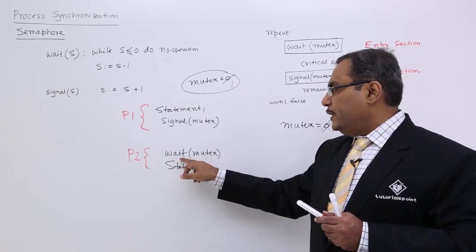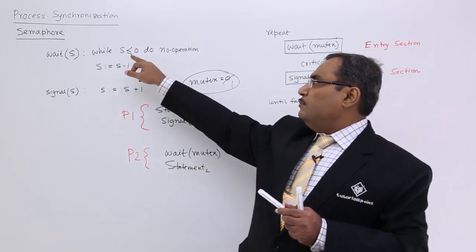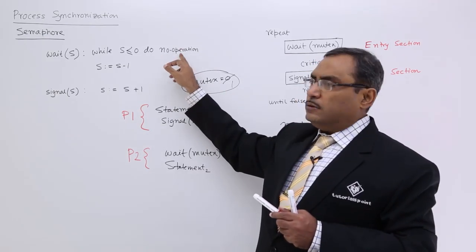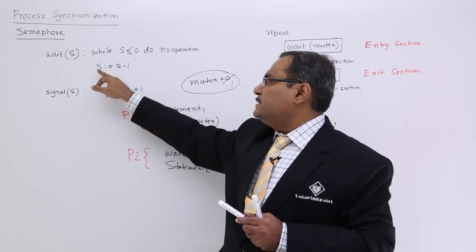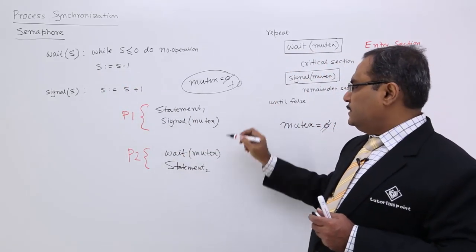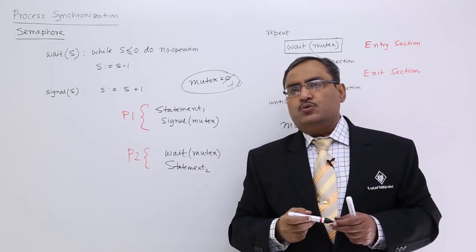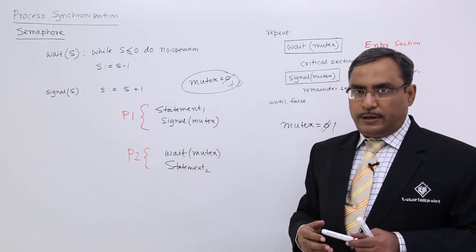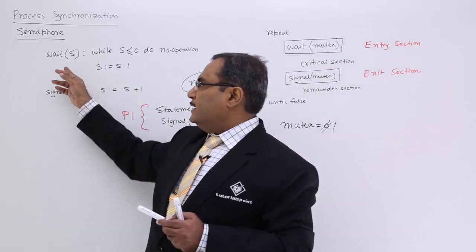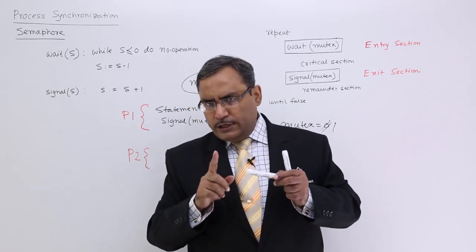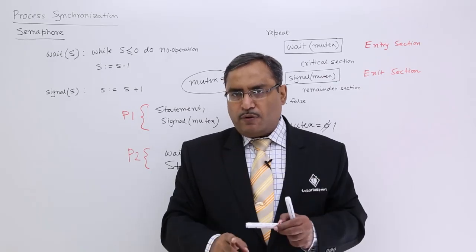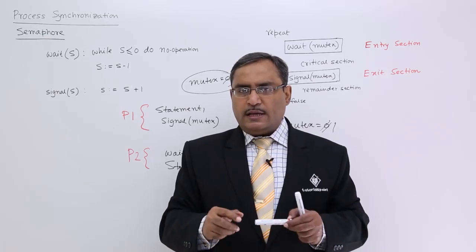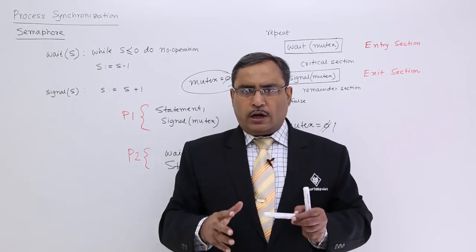Now P2 was waiting in the wait(mutex) statement. Mutex ≤ 0 is now false because it has become 1, so do no operation cannot execute. P2 comes out, makes mutex = mutex − 1 (back to 0), and executes statement 2. As a result, P1 will always execute prior to P2 — there is no other alternative. In this way, using wait and signal atomic operations on the synchronization tool semaphore, we can establish synchronization — that is, the execution order and execution sequence — between multiple cooperating concurrent processes.